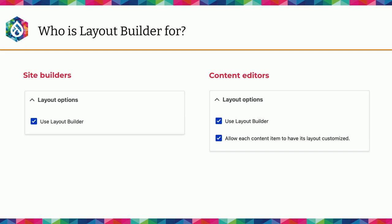The other way Layout Builder can be used is by enabling overrides, which is for content editors, because that allows customization on a per-entity basis. The same features available in the default layout for site builders are also available. One thing to mention is that the customizations made there — the layouts and blocks placed — are content, not configuration. And once an entity is overridden, it is split off from the default layout, so any future changes to the default layout are not going to apply to the overridden entity.